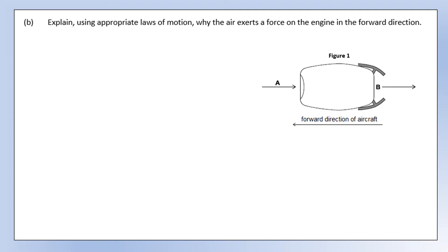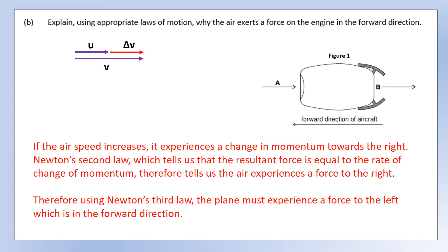Now explain, using the appropriate laws of motion, why the air exerts a force on the engine in the forward direction. The two laws we need are Newton's second and third laws. The air has speed u at A and speed v at B, where v is greater than u, so the air has experienced a change in velocity to the right. Using Newton's second law - resultant force equals rate of change of momentum - the air has experienced a force to the right. Then by Newton's third law, the plane must experience a force to the left, which in this diagram is the forward direction.